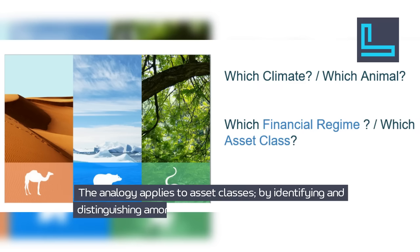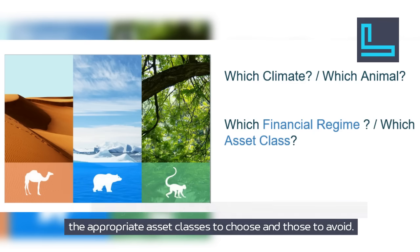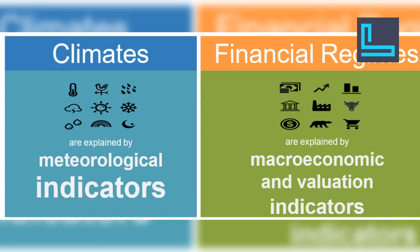The analogy applies to asset classes. By identifying and distinguishing among financial regimes, we can determine the appropriate asset classes to choose and those to avoid. Just as climates are determined by meteorological indicators, financial regimes are shaped by valuations and macroeconomic cycles.